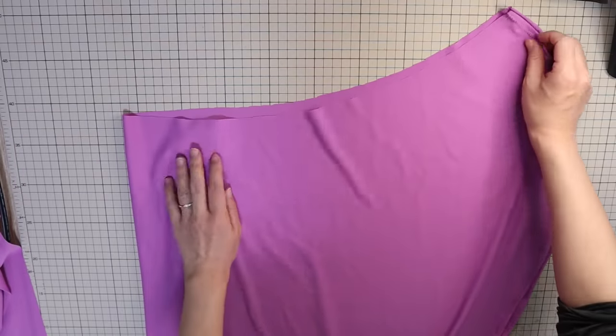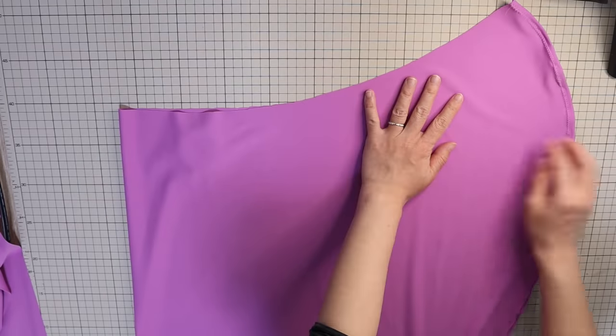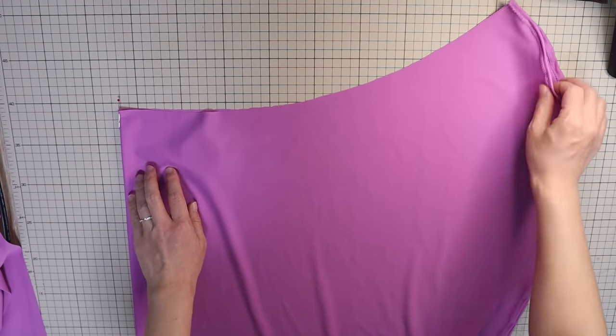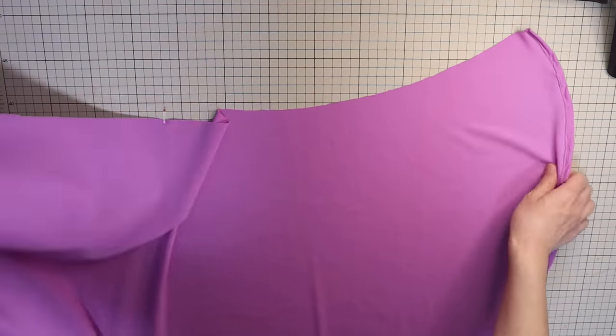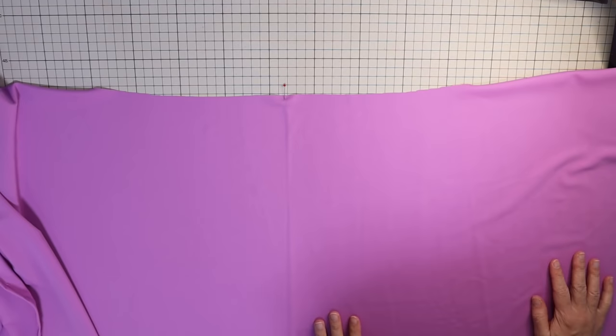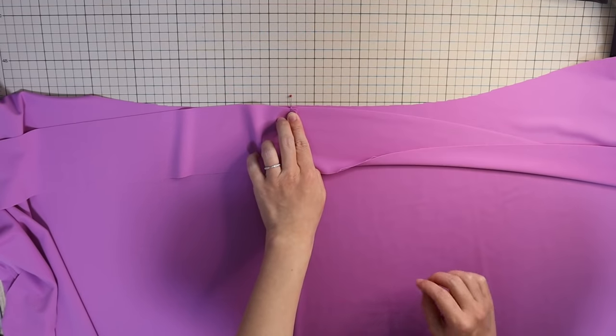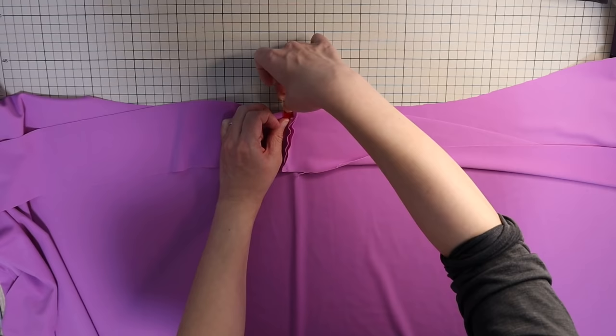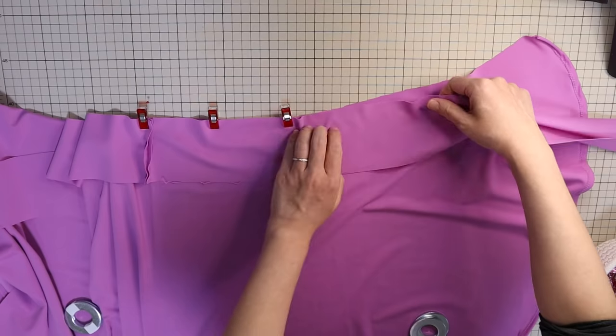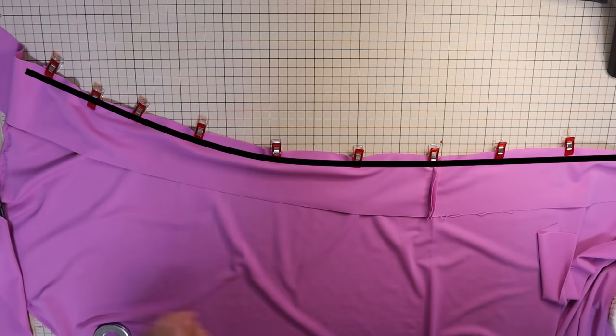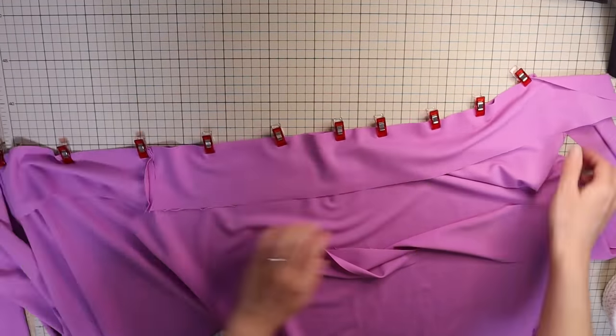Find the center back point on the top edge of the hip scarf panel by folding it in half. Mark it with a pin. Place the panel right side up and place the long strip right side down. Align the center back mark with the seam of the strip and align the rest of the strip to the top edge of the panel. Do a zigzag stitch with a 1 centimeter or 3 eighths of an inch seam allowance along the edges.